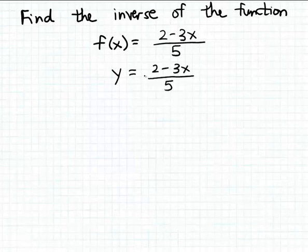And now what we want to do is switch the input and the output quantity in this function. In other words, I'm going to switch the input and the output variables in this equation. So I get x is equal to 2 minus 3 times y divided by 5. And now we're just going to solve this equation for y.